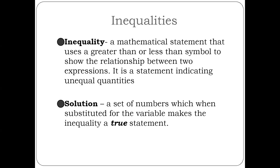A solution for inequalities is a solution set — a whole range of numbers. In my 3x < 18 example, it's every number that's less than 6 all the way to negative infinity. We're still looking for true statements. That's why I asked if, with 3x < 18, the number 6 is a solution. The answer is no, because 3 times 6 is not less than 18 — it's equal to 18 — and that's really the source of a lot of confusion when we start getting into these.